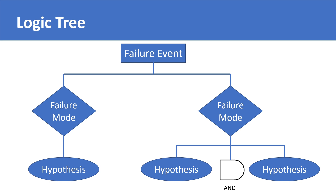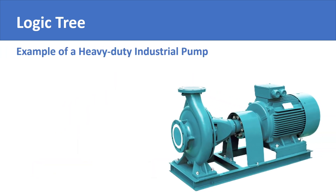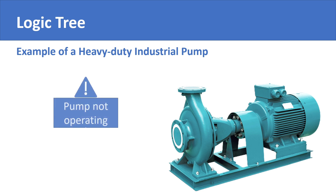Let us make a simple logic tree taking the example of an industrial pump. The type of failure that the pump has experienced is that it has shut off unexpectedly and is now not operating when given command to run. This is our failure event that sits at the top of our logic tree.